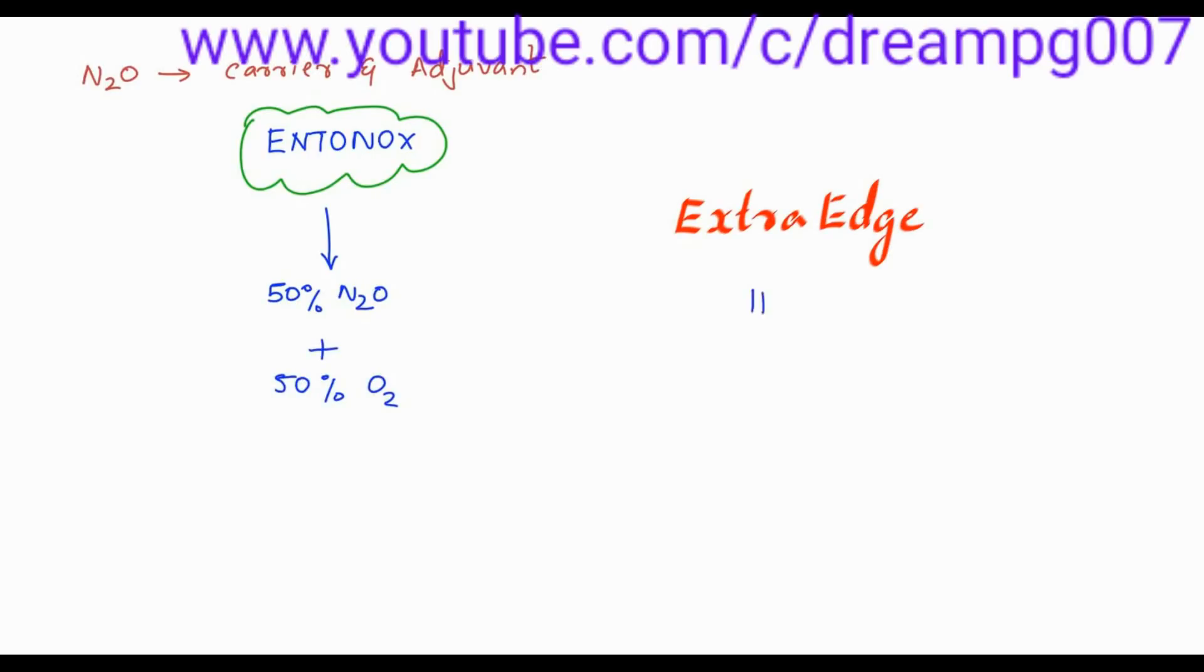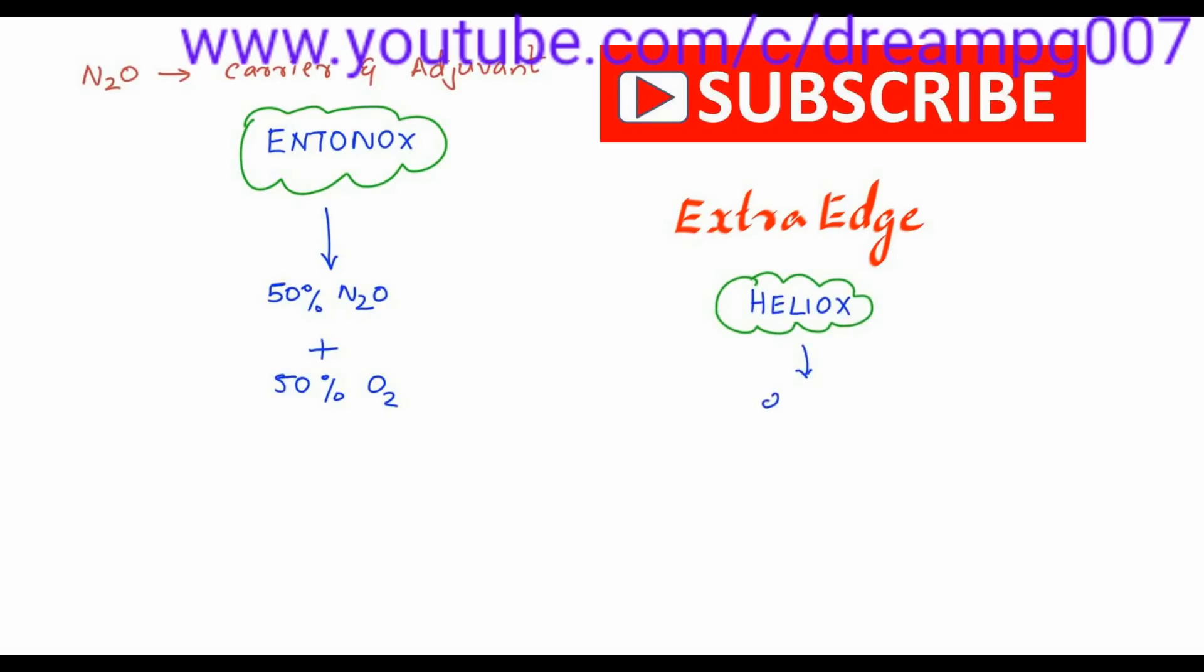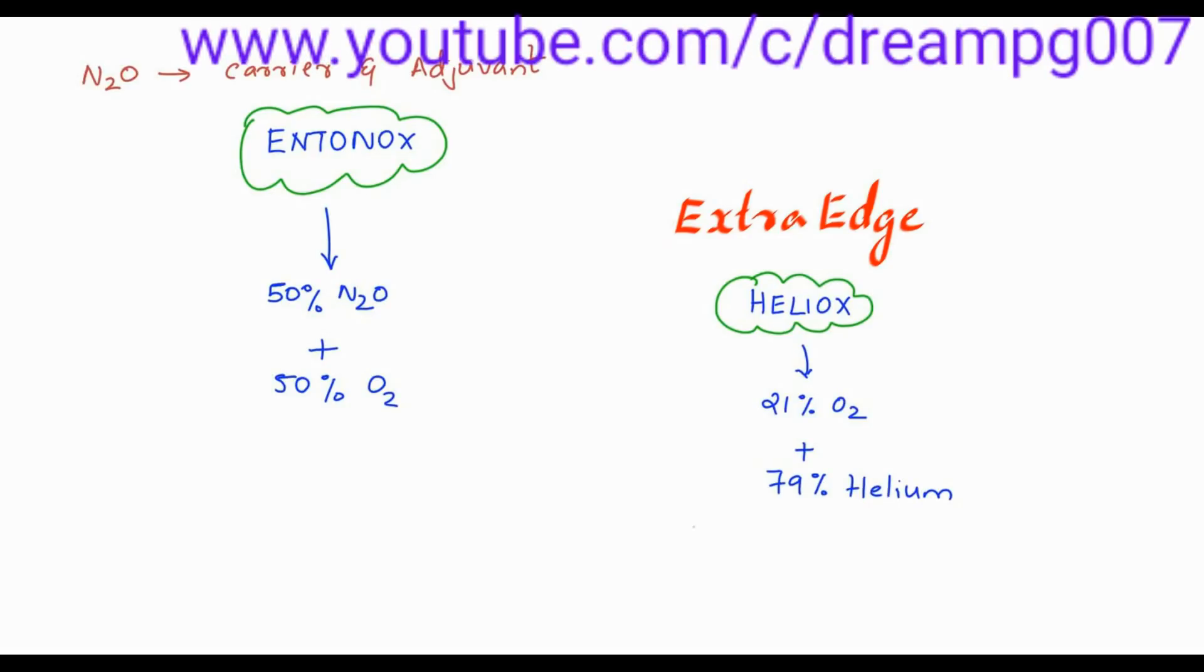Heliox is a combination of helium and oxygen containing 21% oxygen and 79% helium. Heliox is used in asthma and COPD patients and also for diving because it offers less resistance for breathing compared to normal atmospheric air.